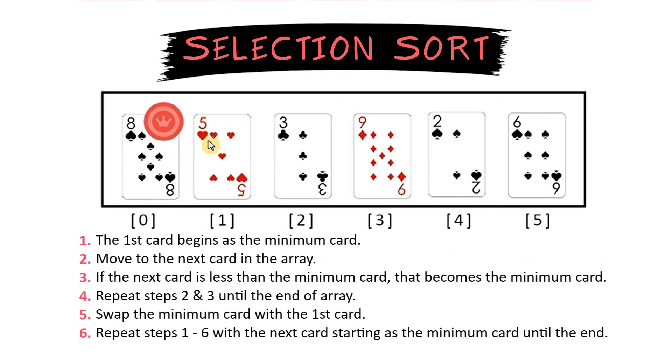Next, check the next card to see if it's less than 8. 5 is less than 8 so we move the minimum marker to the 5. Then we check 3. This is also less than 5 which was the previous minimum so now 3 becomes the new minimum.